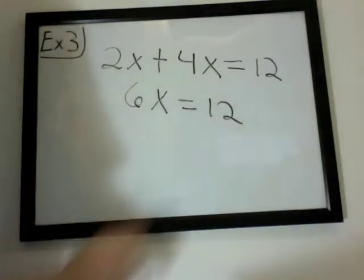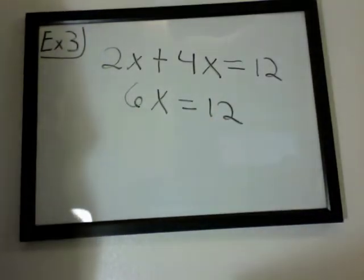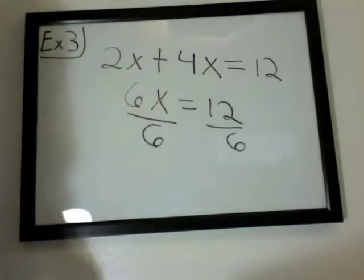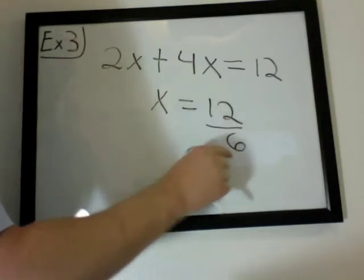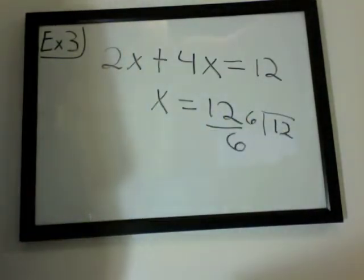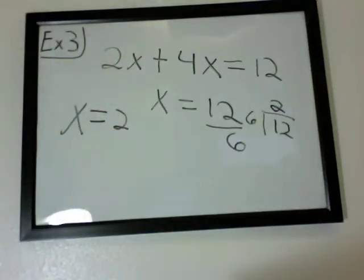To get x by itself, we have to do the opposite operation. To get 6 on the other side, we need to divide because it's being multiplied by the x. Now 6 over 6, they cancel because the top ones are being multiplied together. So 12 divided by 6. How many times does the 6 go into 12? It would be 2 times. x would equal 2.